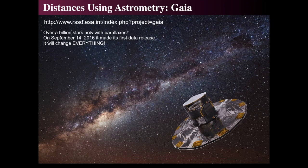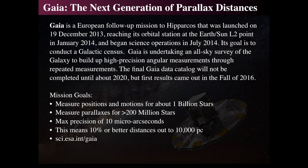However, the Gaia mission, which was launched in 2014 and then did its first data release in September 2016, changed even more things. It will actually get parallaxes for over 200 million stars, and get proper motions and positions for a billion stars. Its maximum precision is about 10 microarcseconds, or about 1% of a milli-arcsecond. That means it can get distances up to 10,000 parsecs, or approximately a quarter of the way around the galaxy — which is really amazing, and definitely almost to the center of the galaxy if you could see through things. I put the website link for the Gaia mission there, because it's one of the most important missions.